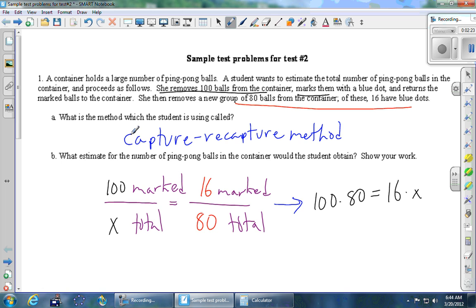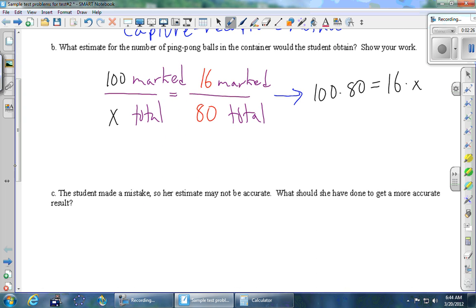And then we just have to solve this thing for x. So 100 times 80 is 8,000, and that's equal to 16x. And then we divide both sides by 16. We get x is 8,000 divided by 16, which is 500.